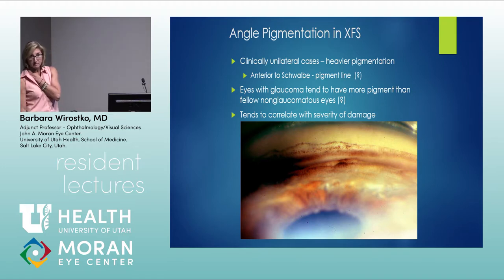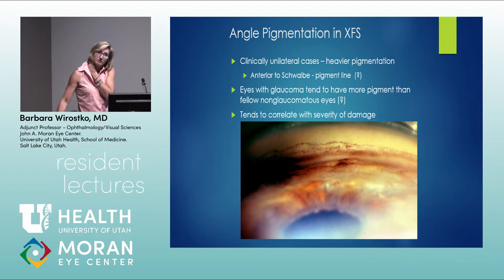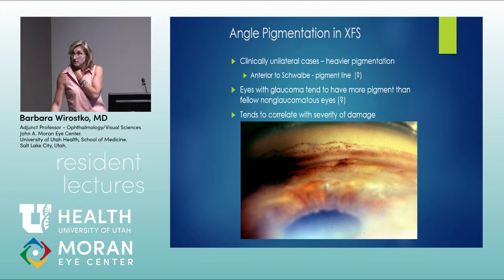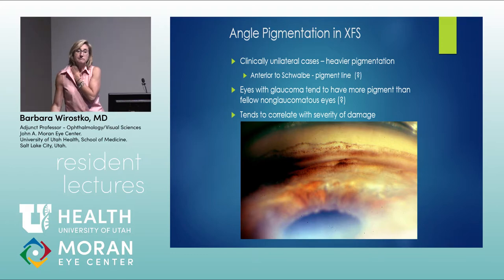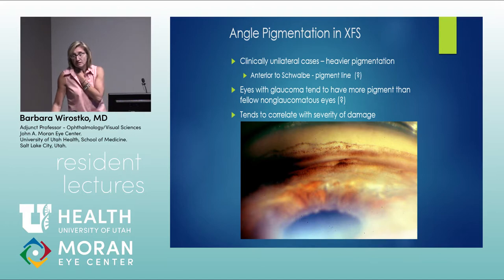Ghost cell glaucoma involves khaki-colored degenerated red blood cells clogging the trabecular meshwork. Also think about elevated episcleral venous pressure if you see blood in Schlemm's canal. However, a small amount of blood in Schlemm's canal can be normal reflux — not every patient needs a full glaucoma workup. It's a dynamic vascular system.